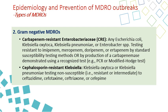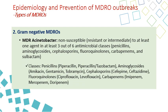Another type involves Klebsiella oxytoca and Klebsiella pneumoniae testing resistant or even intermediate to one of the cephalosporins, including cefotaxime, ceftriaxone, or cefepime. MDR-Acinetobacter is non-susceptible — meaning resistant or intermediate — to at least one agent in at least three to six antimicrobial classes, including penicillins, aminoglycosides, cephalosporins, fluoroquinolones, carbapenems, and sulbactam.